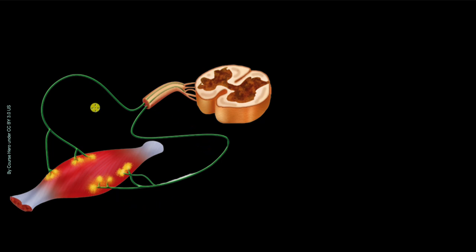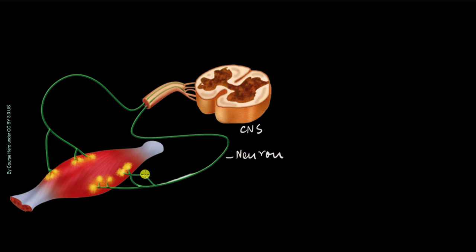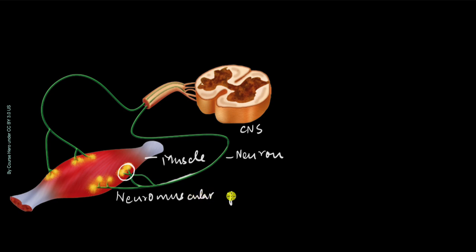First we will look at a disorder that affects the neuromuscular junction. The green things are nerve endings — parts of neurons — coming from the CNS, the central nervous system. This is a cross section of the spinal cord, and this is a muscle. What we are interested in is the contact point between the neuron and the muscle, which is called the neuromuscular junction.